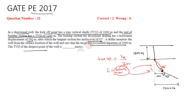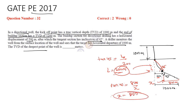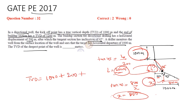Now coming to this right angle triangle — since this is 200m, then this would be around 800m. Now again, tan 45; we need to find out this particular section. Let this be X; tan 45 would be equal to 800 upon X, so X will be equal to 800m. So the total TVD at the deepest point will be 1000 plus L which is 200 plus X which is 800.